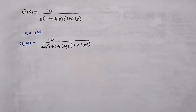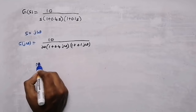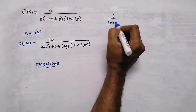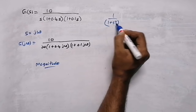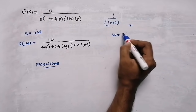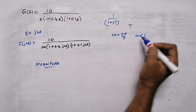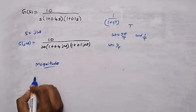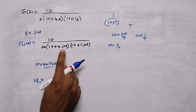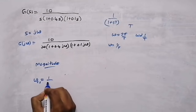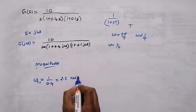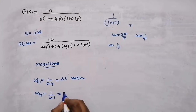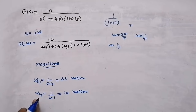After converting to G(jω), we need to find the corner frequencies. In standard form 1 + sT, the corner frequency is ω = 1/T. The first corner frequency: the value near s is 0.4, so ω_c1 = 1/0.4 = 2.5 rad/s. The second corner frequency: the value near s is 0.1, so ω_c2 = 1/0.1 = 10 rad/s.